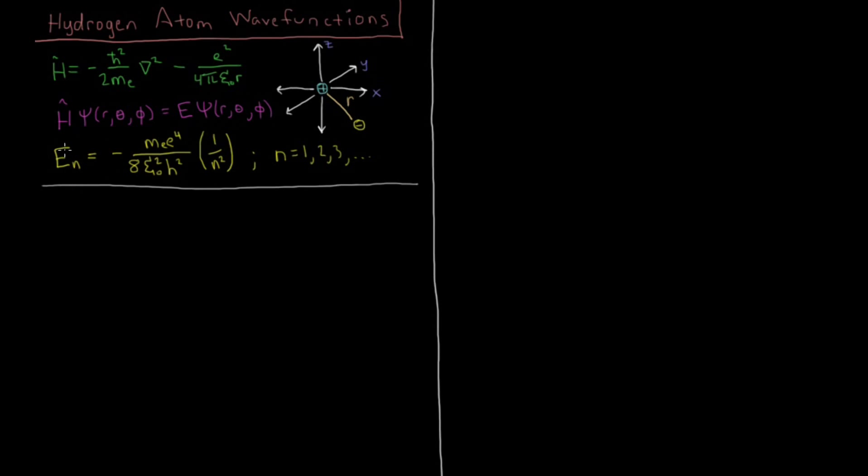And we looked in the last video at the energy levels, which depend on these constants: mass of the electron, charge of the electron, epsilon naught, Planck's constant, and depend on the inverse square of some quantum number n. So now let's look at what these wave functions are that give these energies.